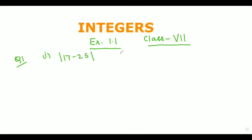So what we will do? First of all, we will solve it as normal and the absolute value will remain intact. So 17 minus 25 will come out as minus 8. But as we all know, if some integer is coming out from the absolute value and if it is negative, it will become positive. So after coming out from the absolute value, minus 8 will become positive 8.